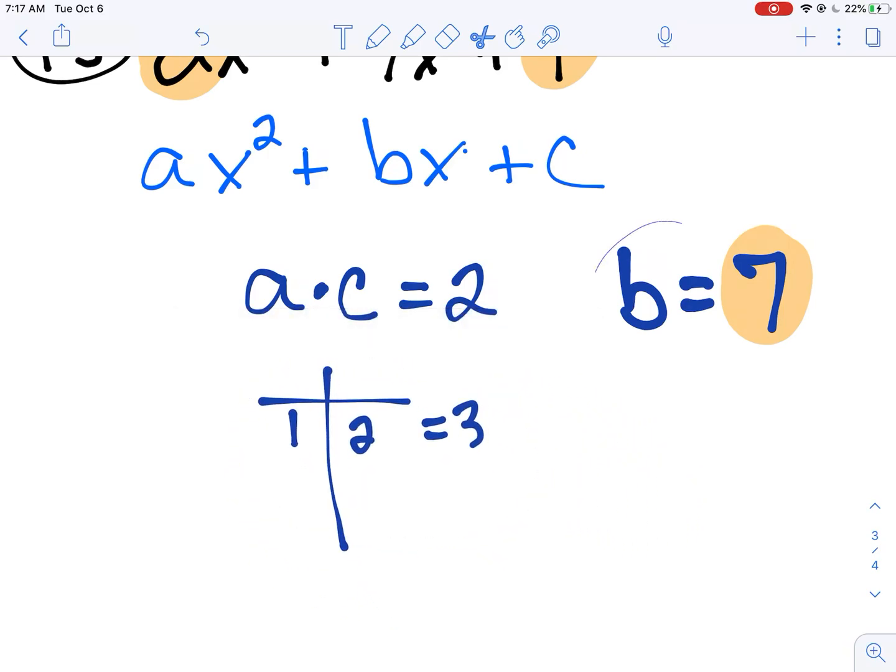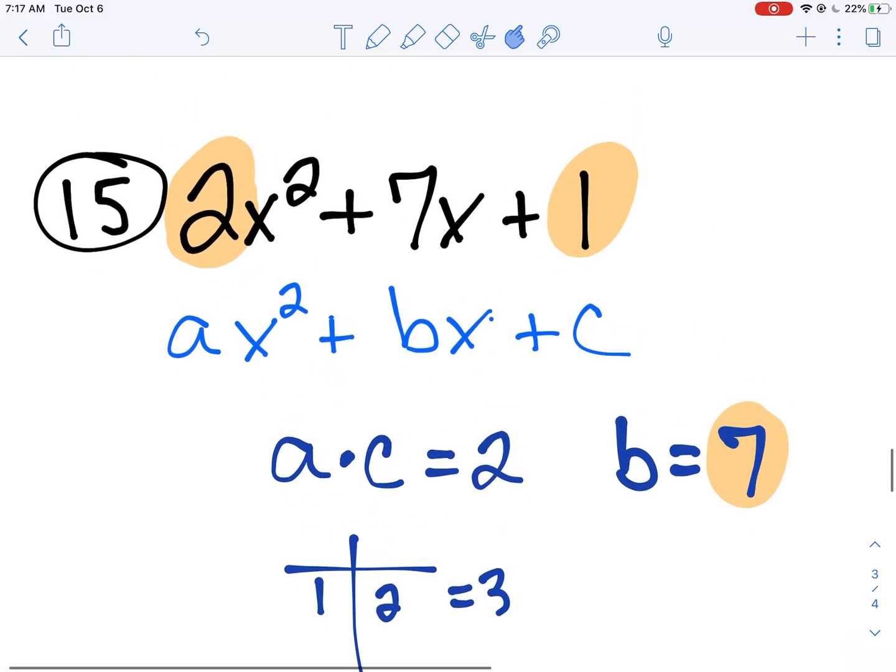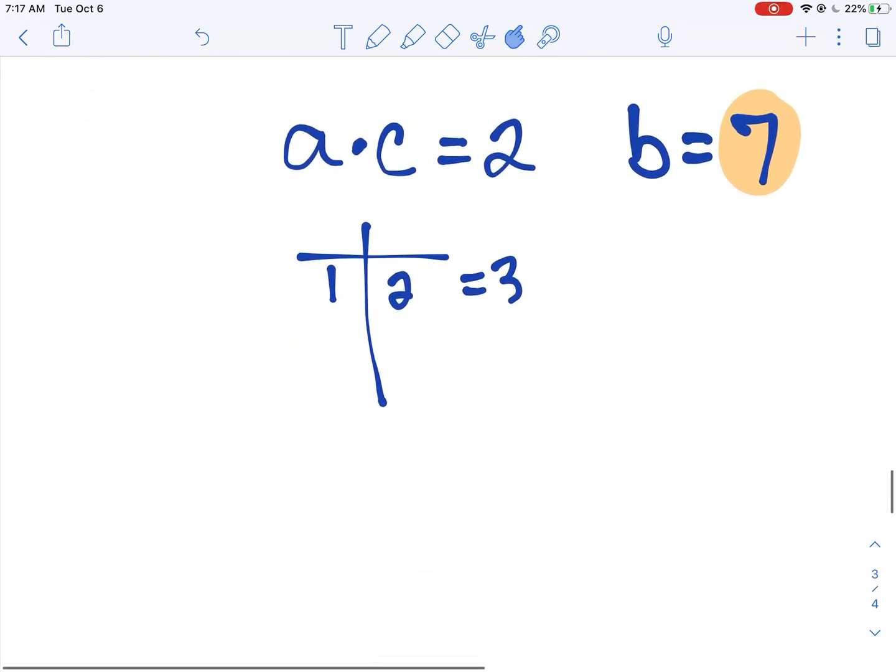What happens sometimes is you get quadratics that cannot be factored. So in this case, 2x squared plus 7x plus 1. Guess what? It can't be factored.